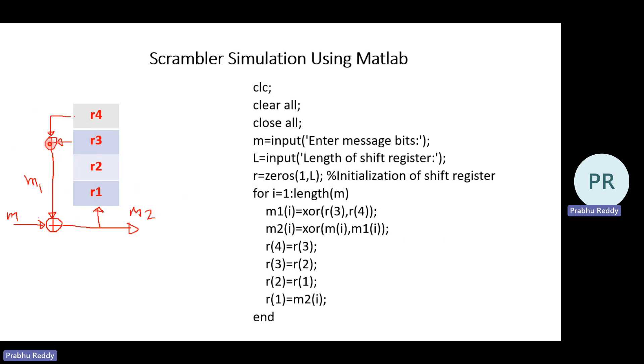Right now we are having four flip-flops in a shift register and two XOR operations. This is my incoming message bit and it is XORed with M1 and this M1 is an XOR between R4 and R3. And this output of this XOR between M1 and M is my scrambled information that is M2. Now we will see how it can be simulated.